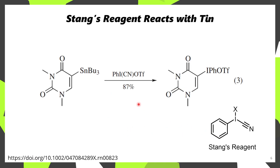Now, sometimes iodoniums can instead be transmetallated. Here's a case where Stang's reagent, which is the corresponding cyanoiodonium reagent, is able to transmetallate with this tributyltin uracil derivative, preparing the corresponding vinyl phenyliodonium triflate. This could then be engaged in subsequent chemistry to install new functional groups at the alpha position.